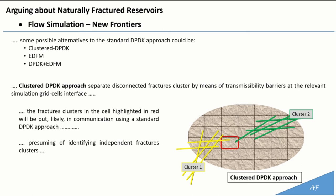This is performed by defining a fracture cluster identifier in the grid and checking values in neighboring cells. Whenever the cluster identifier of two adjacent fractured cells is not the same, a transmissibility multiplier equal to zero is set in the simulation at the interface between these two cells, to account for the estimated connectivity of the fracture network. Therefore, the fractures in the cells highlighted in red will not be put in communication using the clustered DPDK approach.